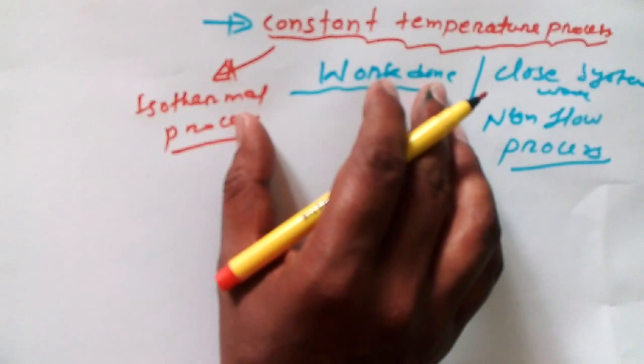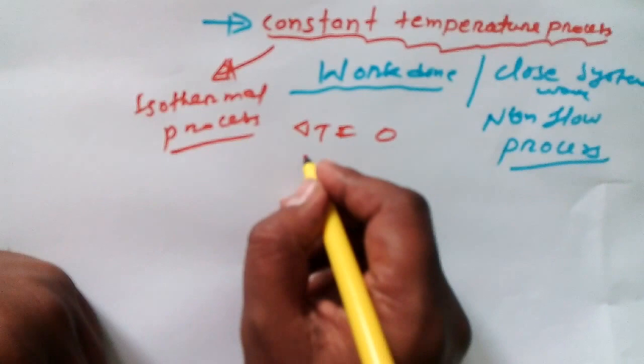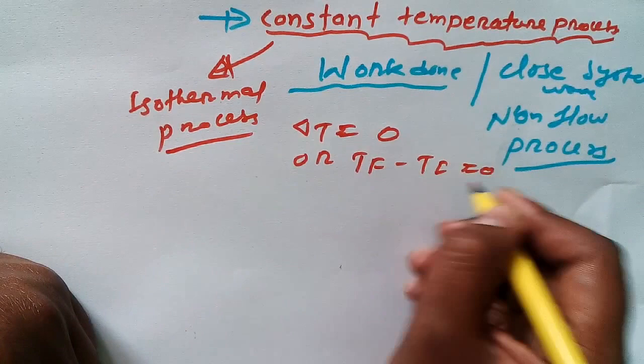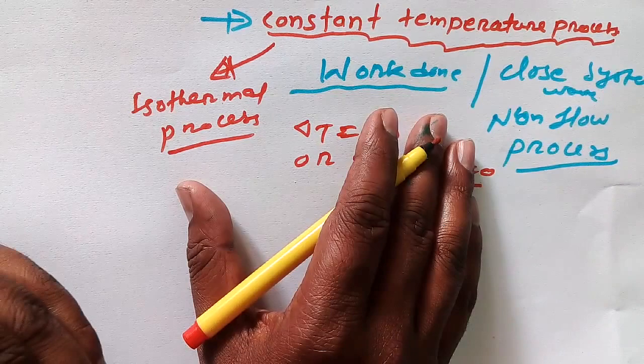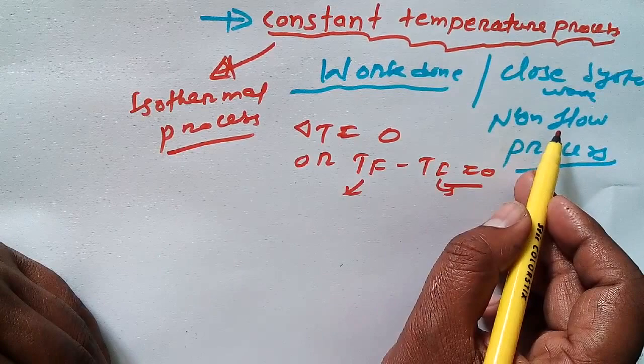If you have studied this topic, then definitely you have seen this: ΔT is equal to zero, or you have also seen that ΔT when TF minus TI is equal to zero. This F means final, this I means initial. But today I'm going to share with you how to derive the formula for finding out work done in this process.